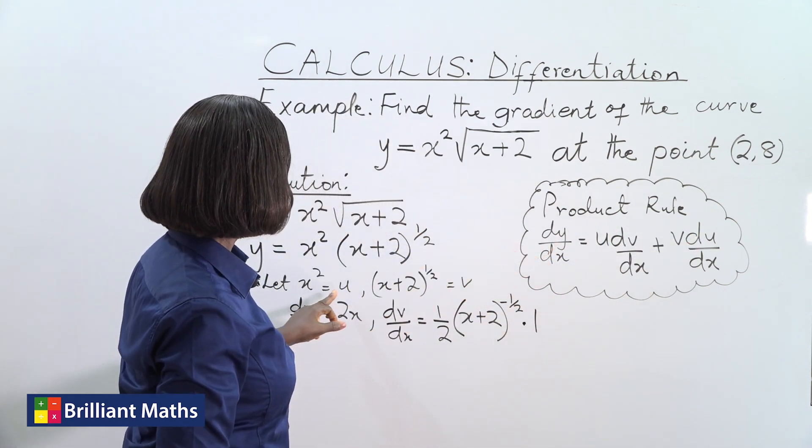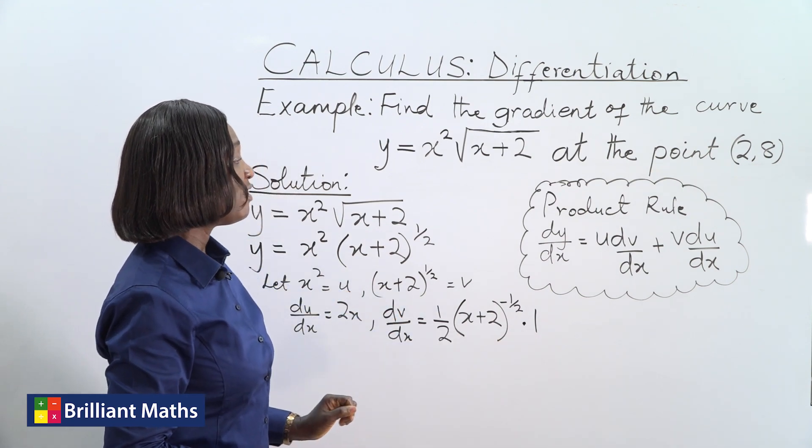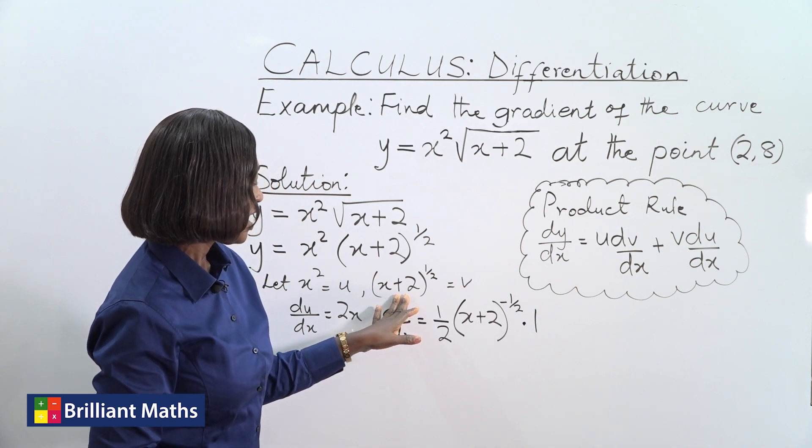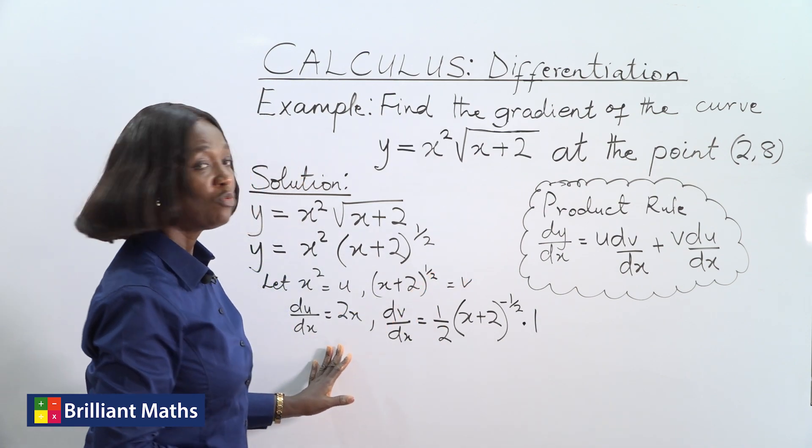We have our u, which is x squared. We have our dv/dx, which is that. We have our v, which is x plus 2 to the power half. And we have our du/dx, which is 2x.